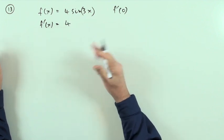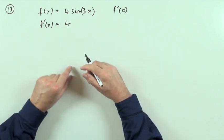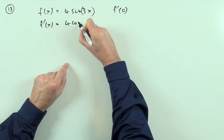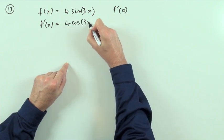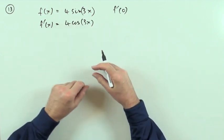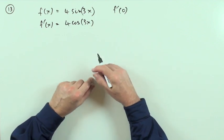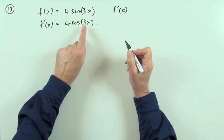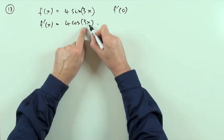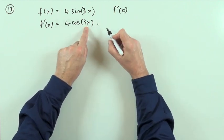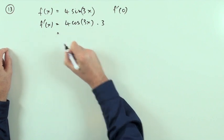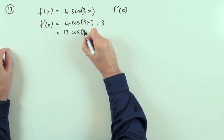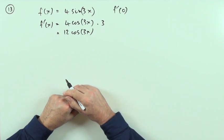A coefficient is just a coefficient. The derivative of the sine of something is the cosine of whatever that thing is. If it were just x, that'd be the end of it, but since it's not just x you have to multiply by the derivative of the inner function — the derivative of 3x is 3 — so what you've got is 12 cos(3x).